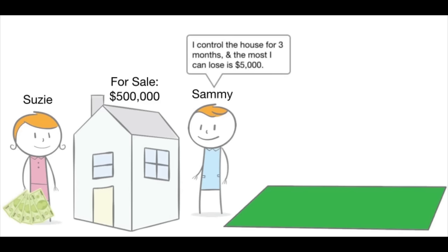In effect, Sammy is controlling a $500,000 asset for three months for only $5,000. No matter what happens during that time, the most he can lose is $5,000. Susie, on the other hand, is happy to take the $5,000 as she had no guarantee anyone else would buy the house at her asking price, nor did she feel the nearby parcel of land would sell anytime soon.